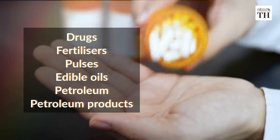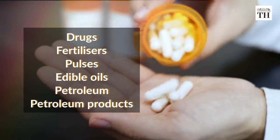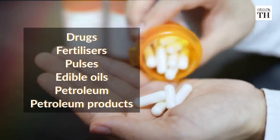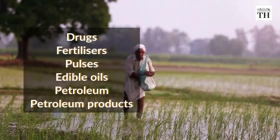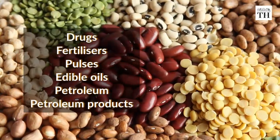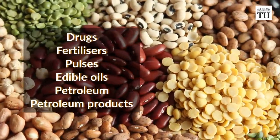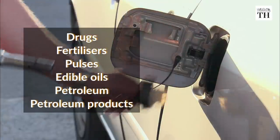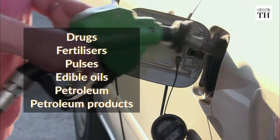The list of items under the ECA include drugs, fertilisers, pulses and edible oils, petroleum and petroleum products.